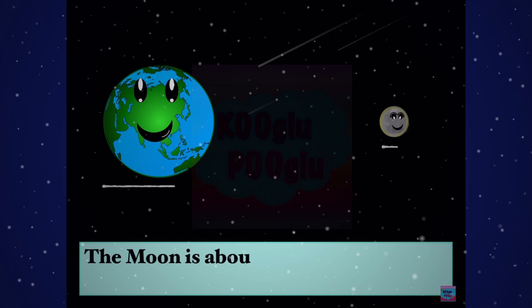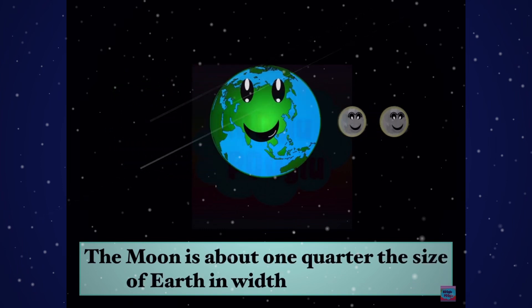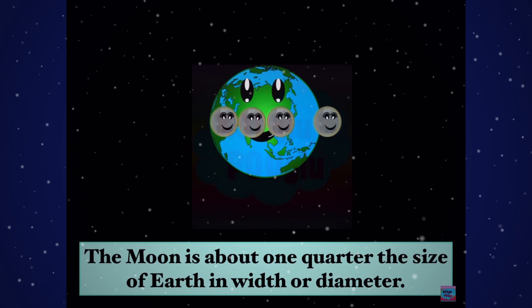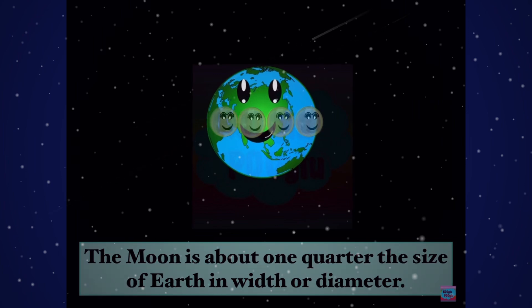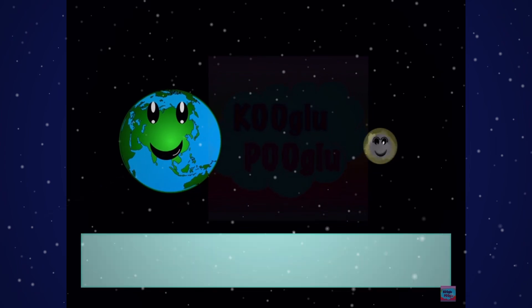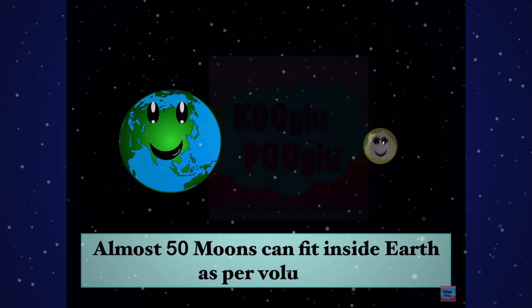The Moon is about one quarter the size of the Earth in width or diameter. Almost 50 moons can fit inside Earth as per volume.